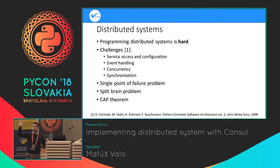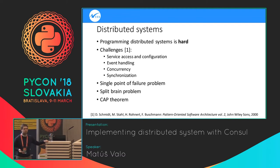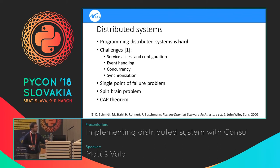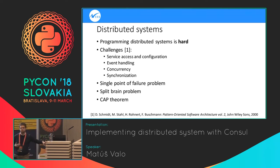And also the CAP theorem — who knows it? CAP theorem relates to distributed data storages. The main theory is that you cannot have everything in your cluster. A distributed storage can be available, consistent, and network-partition tolerant, but not all at once. You need to pick two properties, and the third you cannot afford. So when creating distributed systems, you need to know the trade-offs you want to make.